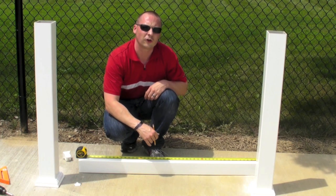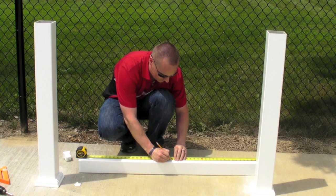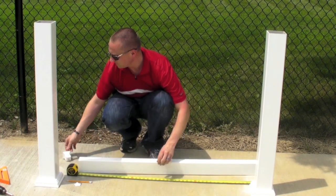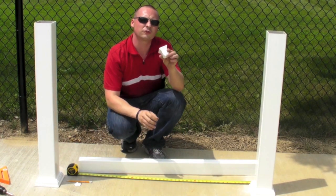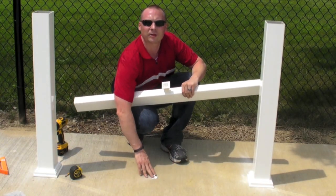Next step is to install the toe kick. You'll find the center of your rail, make a mark and screw your toe kick in place. After you've installed your toe kick, don't forget to install your toe kick plate.